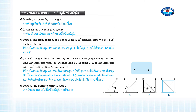Given AB as a length of a square. Draw a line from point A to point C using a 45-degree triangle. Now we get a 45-degree inclined line AC.